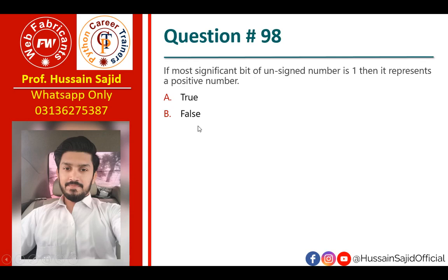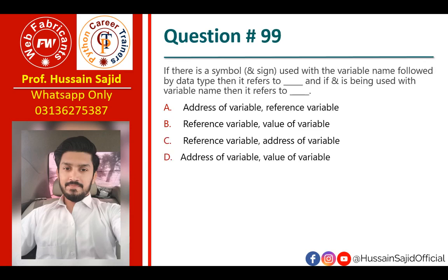If the most significant bit of an unsigned number is 1, it does not represent a negative number — it represents a positive number. Also, if an ampersand symbol `&` is used with a variable name followed by a data type, then it refers to a reference variable.